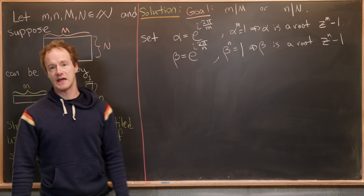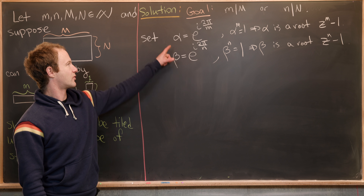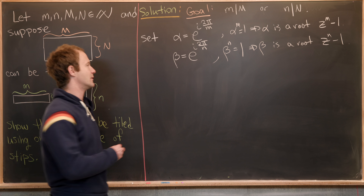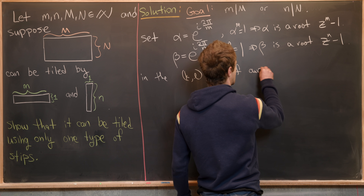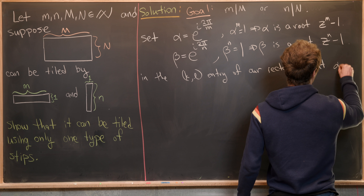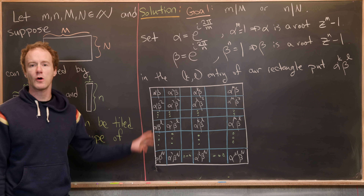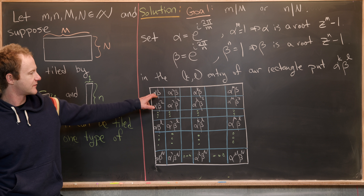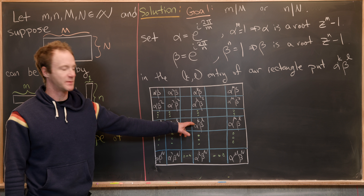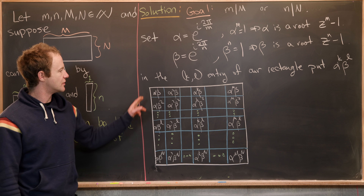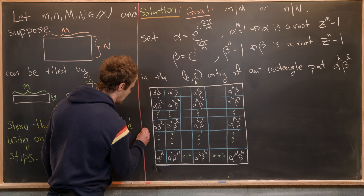Next, we fill every unit square in the M by N rectangle with a number that is a product of a power of alpha and a power of beta. In the (k, l) entry of our rectangle, we place the number alpha^k times beta^l — so in the kth column and the lth row we have alpha^k beta^l.